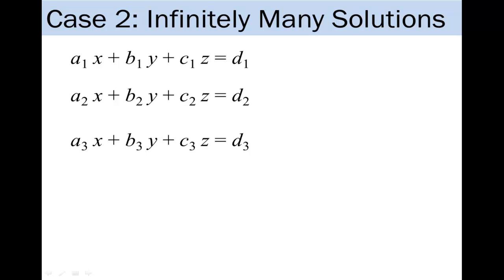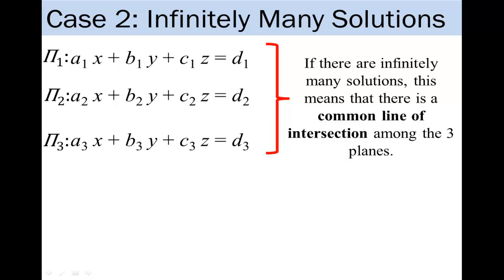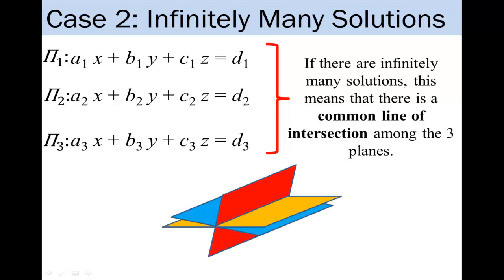In case 2, suppose that there are infinitely many solutions to this system of linear equations. Thinking of these three equations as planes, this means that the three planes intersect along a line. This can be illustrated in how the planes are oriented in the diagram below. Notice that in the diagram, the three planes intersect along a line.